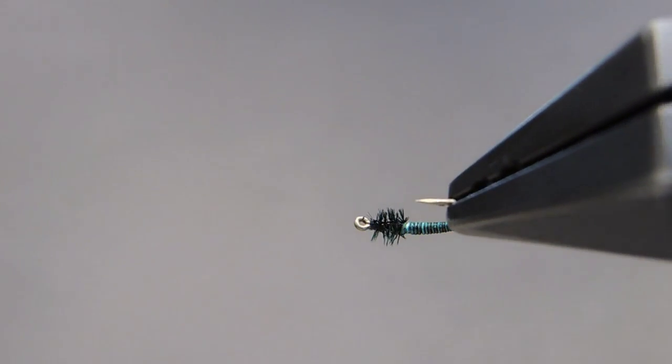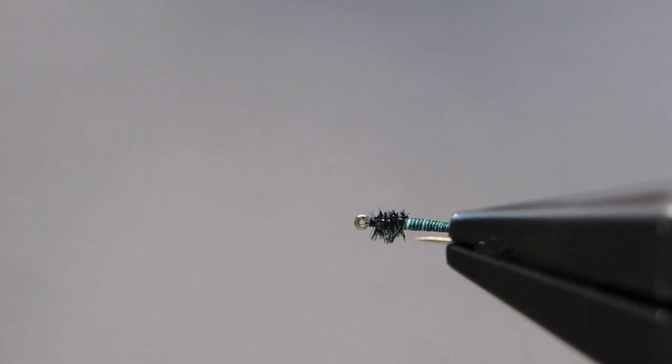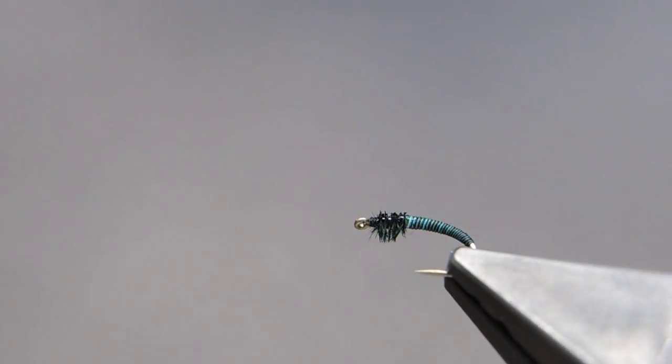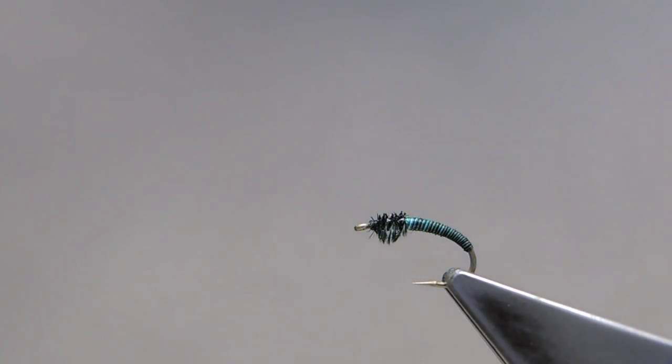This caseless caddis larvae is a predator, and it roams about on the bottom of most streams, looking for food. Often it gets dislodged, tumbling away in the current. Trout love it.